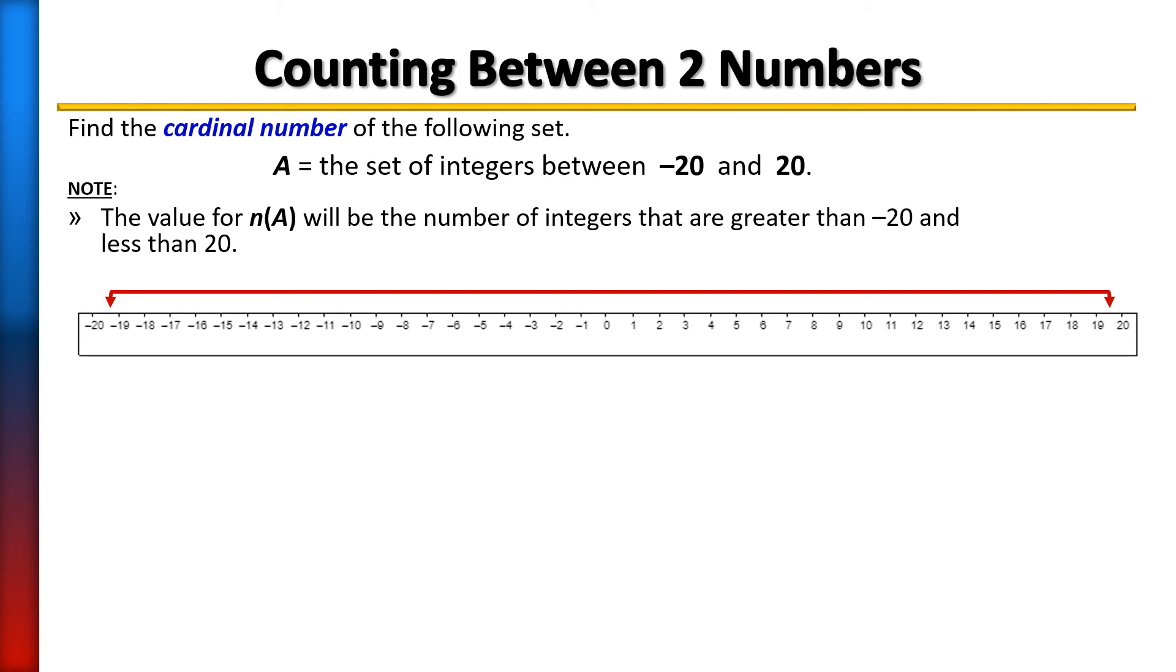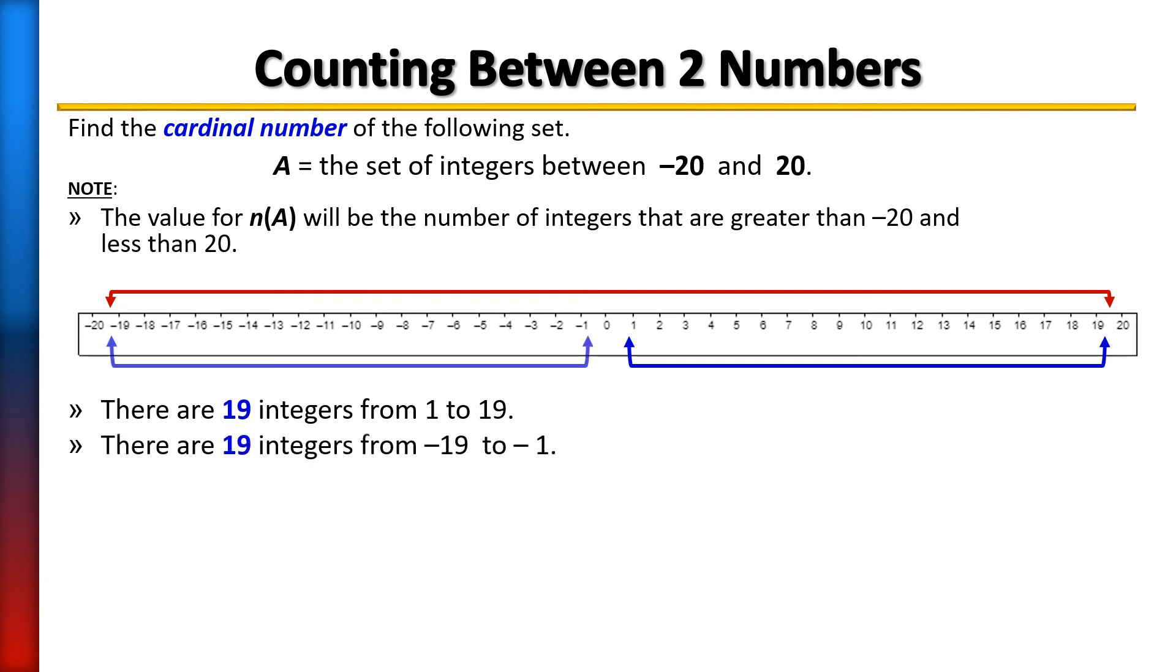You can just think about the fact that on the positive end, you would have 19 numbers between 1 and 19. Because again, we want between negative 20 and 20. It does not include 20. So there are 19 numbers on that positive side. There are also 19 numbers on the negative side, going from negative 1 to negative 19. And then remember, we also have zero. So we have to include that in there as well because it's a number. And when we add those, that's going to give us a total of 39 numbers. So we would say that the cardinal number n(A) equals 39.